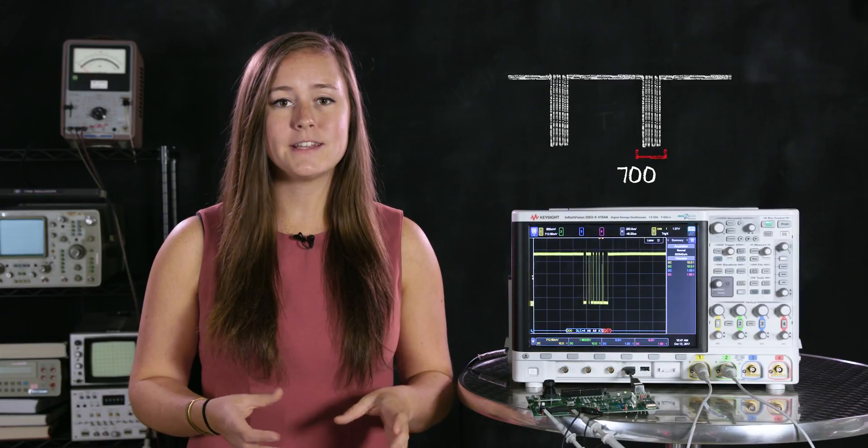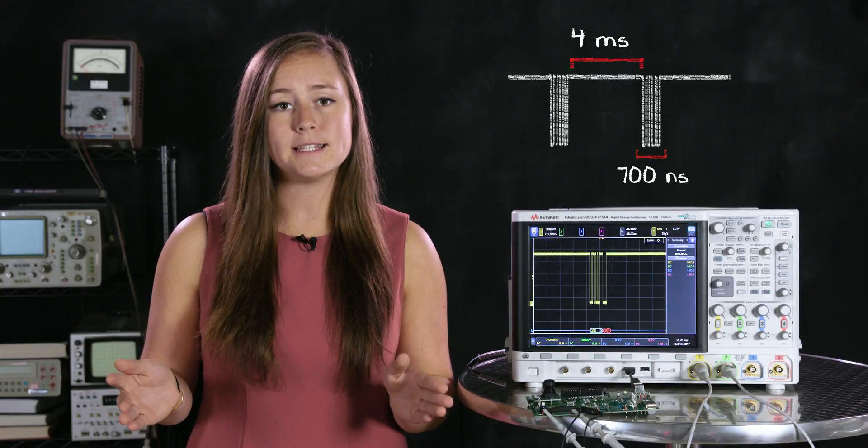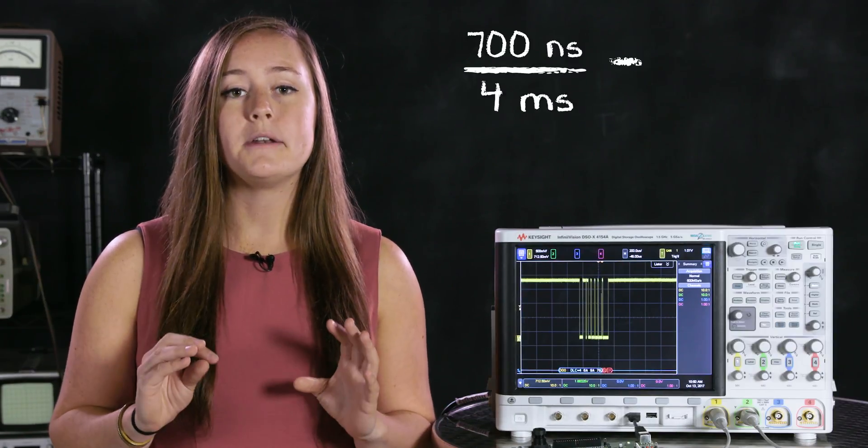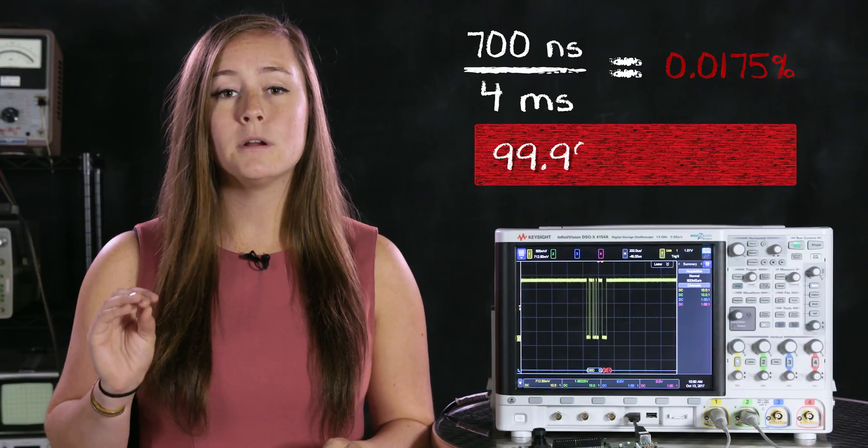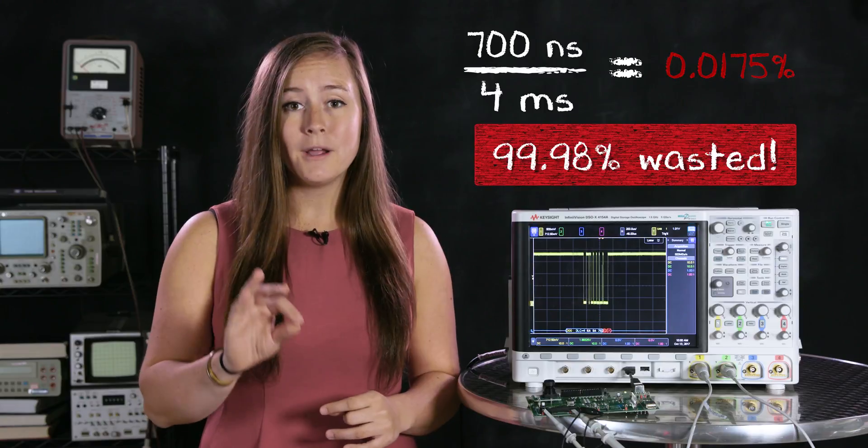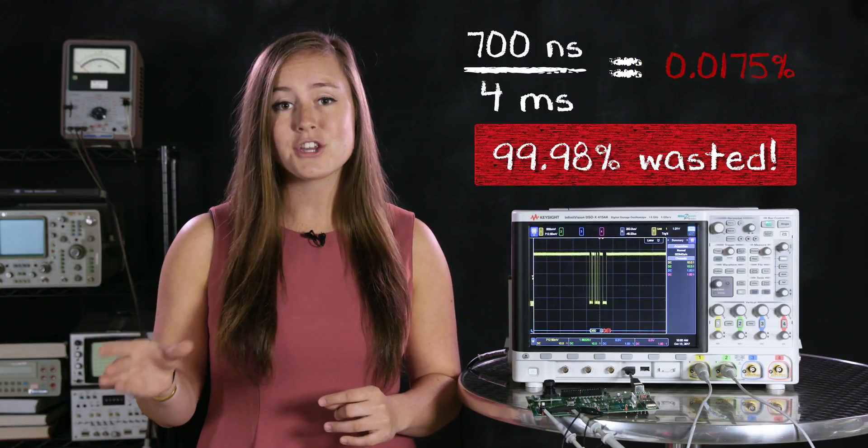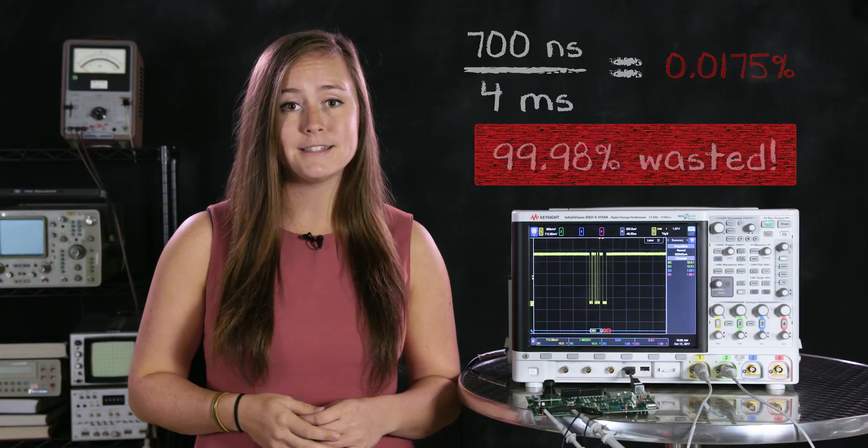So let's say the actual packet itself is 700 nanoseconds wide and the dead time in between is about four milliseconds long. If you were to capture this as is the traditional way with all the dead time included, you would use about 99.98% of your memory on the dead time and you would only use about 0.0175% of it on the part you actually care about, the packets and the pulses. That's crazy!